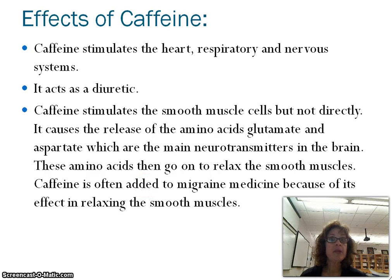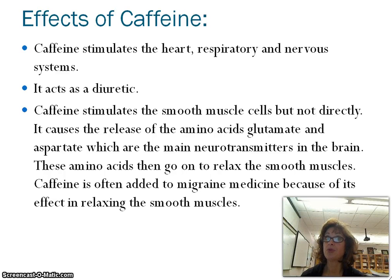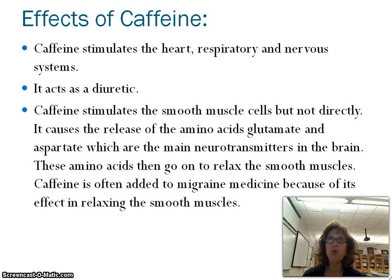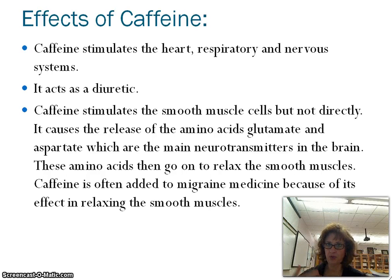Caffeine stimulates the heart, the respiratory system, and the nervous system. It acts as a diuretic, which means it removes water from the body and you have to use the restroom. Caffeine also stimulates the smooth muscles, but not directly — what it does is it releases neurotransmitters glutamate and aspartate, which then go on to relax the smooth muscles.